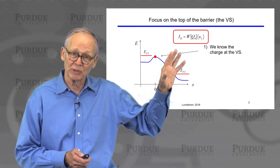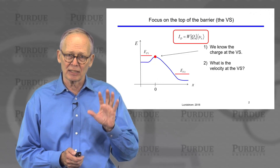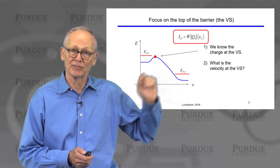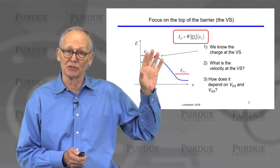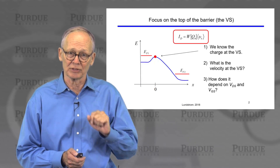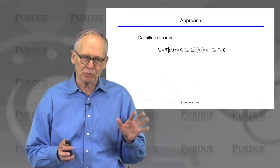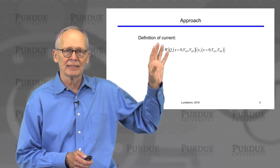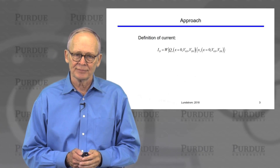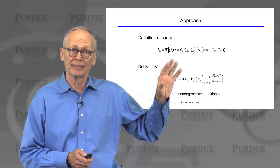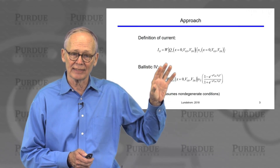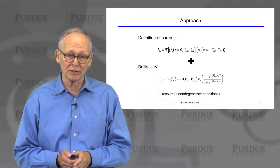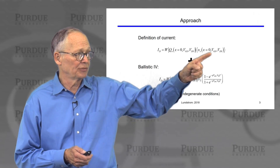We've been focusing on this point because we know the charge at that point, but now we have a couple of questions about the velocity. We want to understand: what is that average velocity at the top of the barrier? How does it depend on drain voltage? How does it depend on gate voltage? The approach we're going to use is very straightforward. We know that the definition of current involves a charge and a velocity, and we have an IV expression that gives us the current through a ballistic MOSFET at any drain-to-source voltage. So we're simply going to equate them and solve for the velocity.